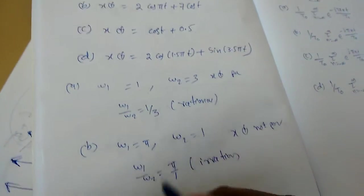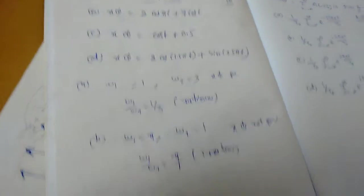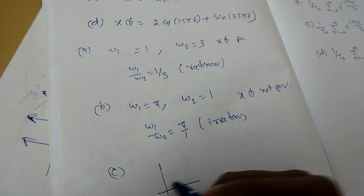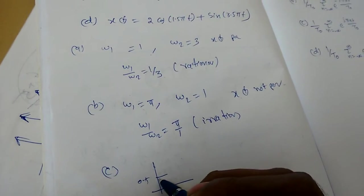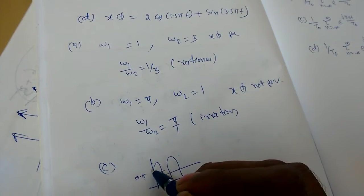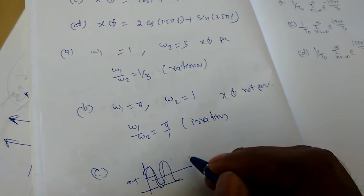Now see, anyway cos t plus 0.5, this is like this. So upon 0.5, we will get the signal of cos t. So cos t is like this. So it is also periodic, very simple one.